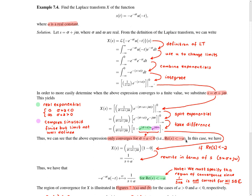Assuming this condition is satisfied, we have the next line, where we can rewrite σ + jω in the denominator as s. So our final answer is X(s) = 1/(s + a), subject to the constraint that the real part of s is less than −a.